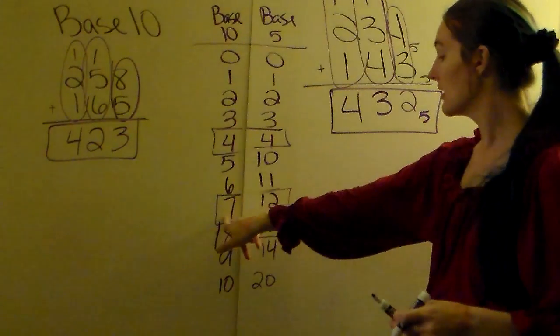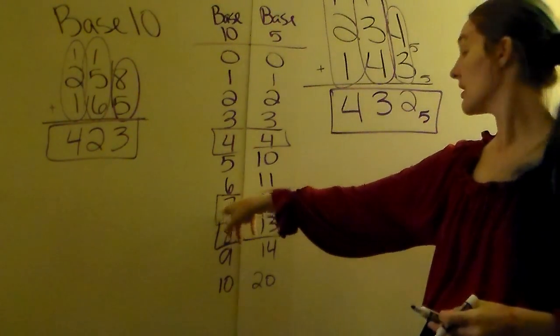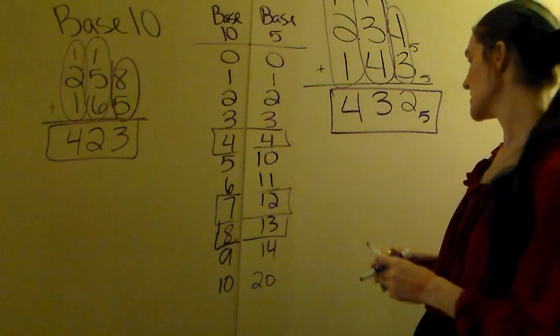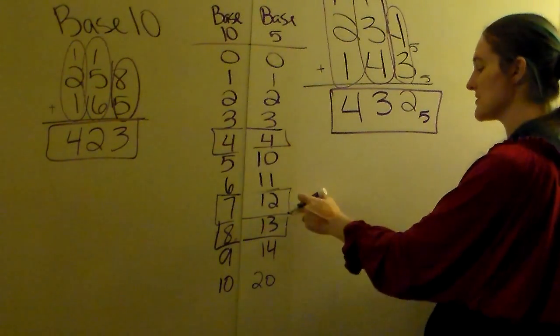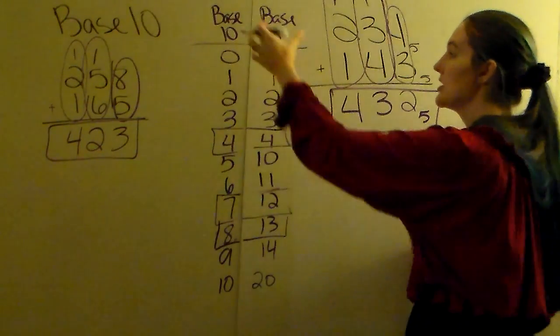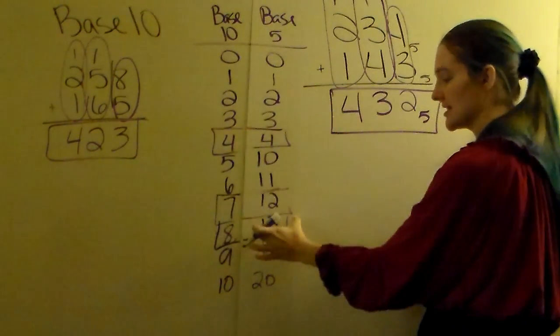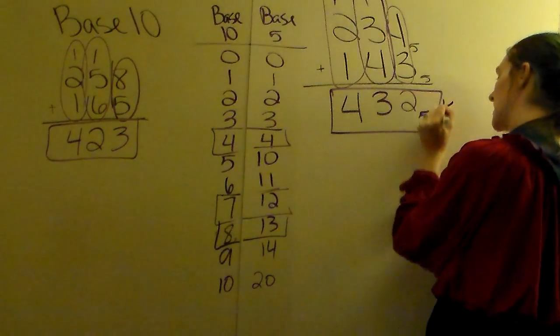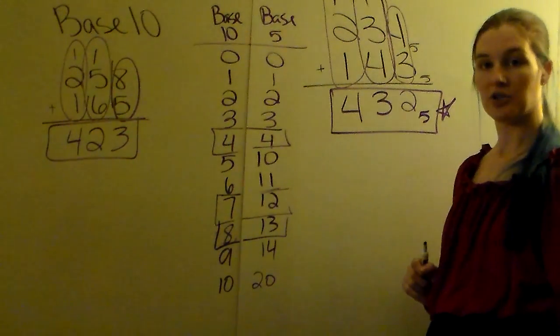Translate that to base 5 to get the 12. Do it in base 10, translate it to base 5 with your translation chart. This is your answer and you're done.